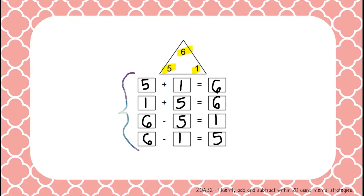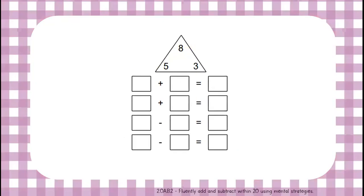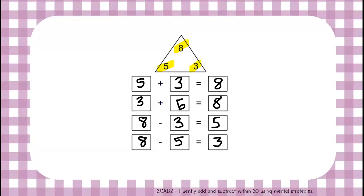Let's move on to our next fact family. Repeat the numbers after me: eight, three, five. Good job. Let's fill out our chart. Five plus three equals eight. Three plus five equals eight. Now we subtract from the larger number: eight minus three equals five, and eight minus five equals three.